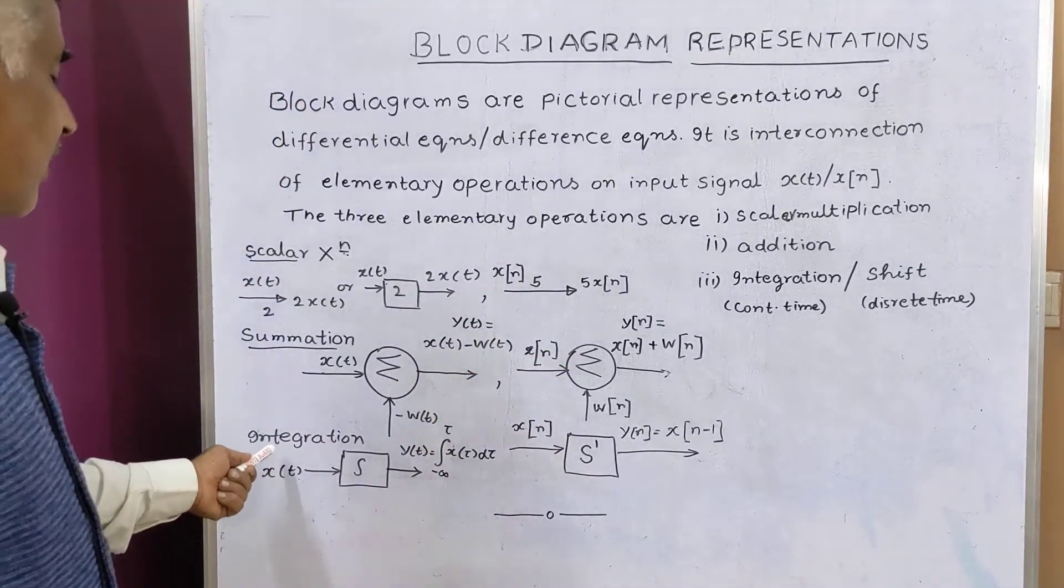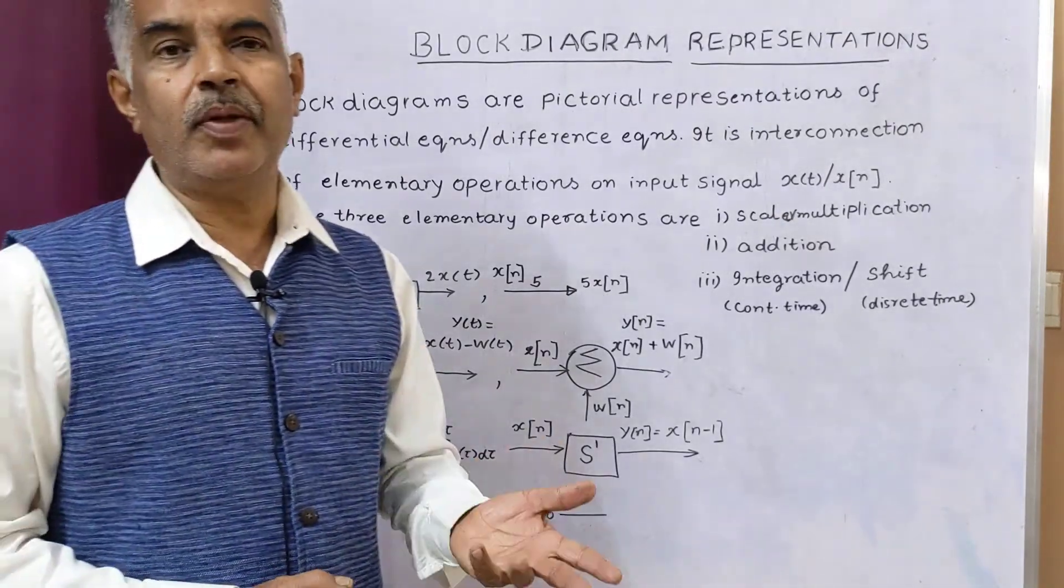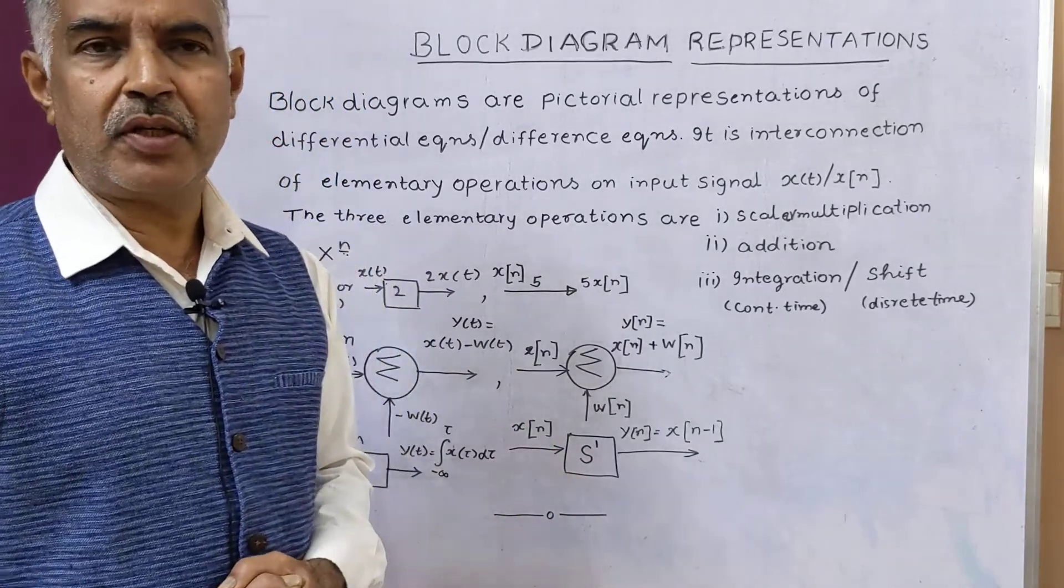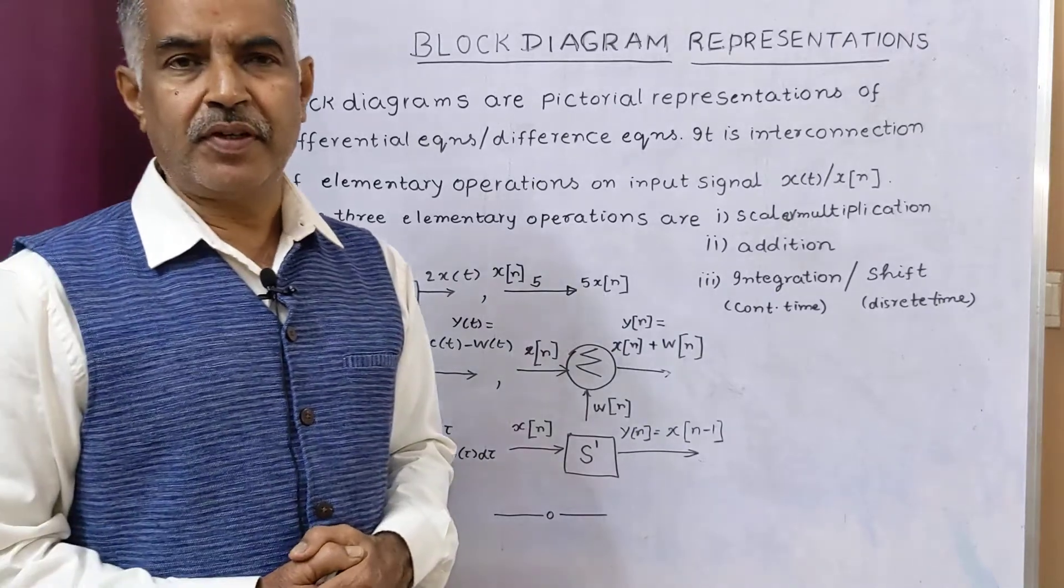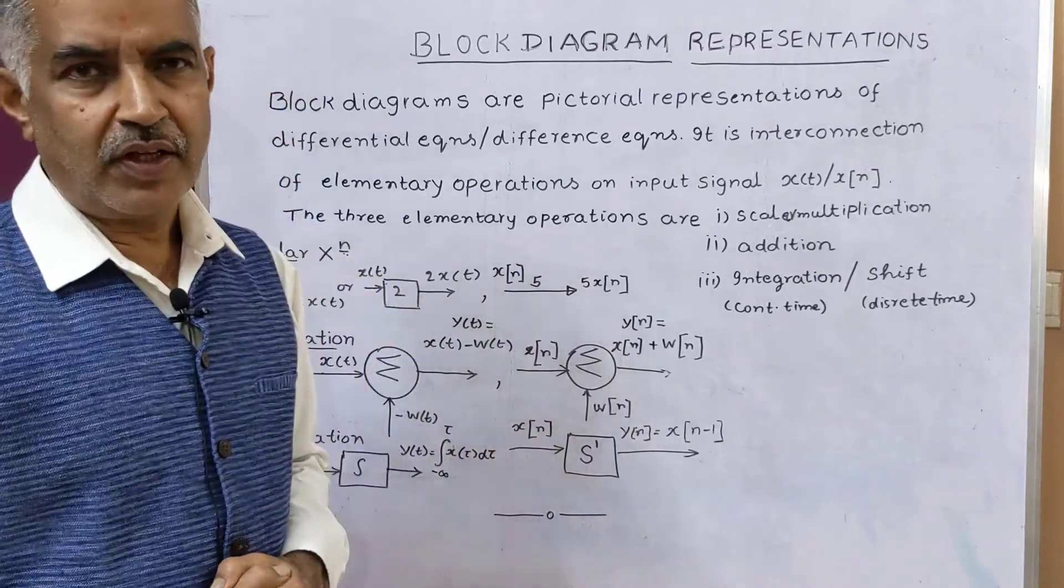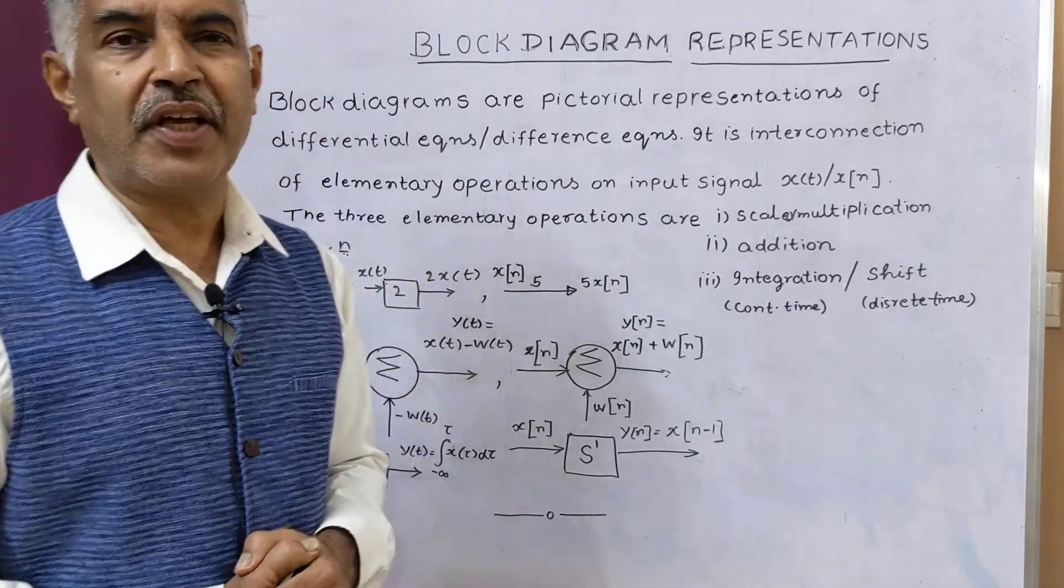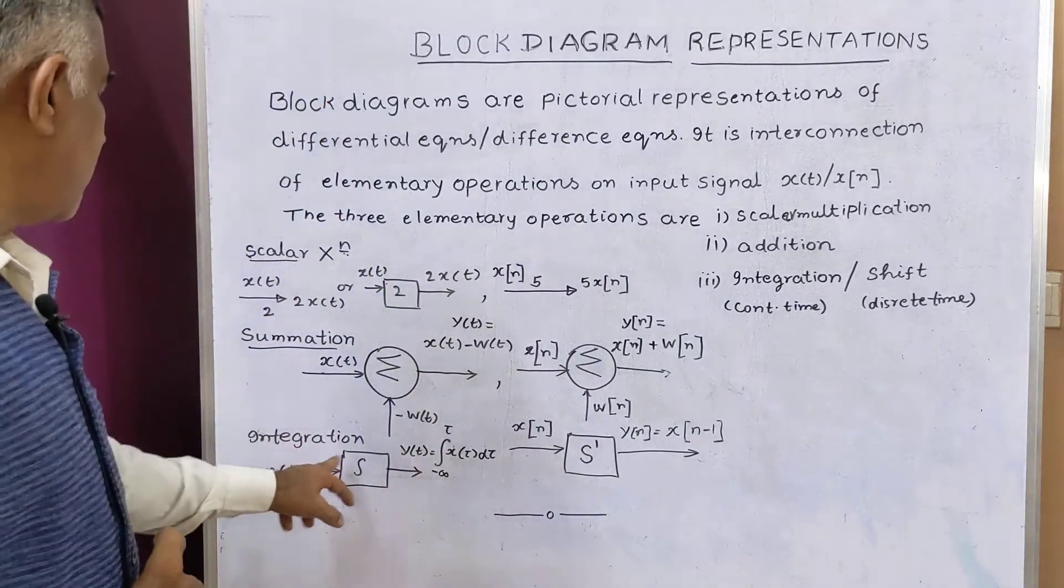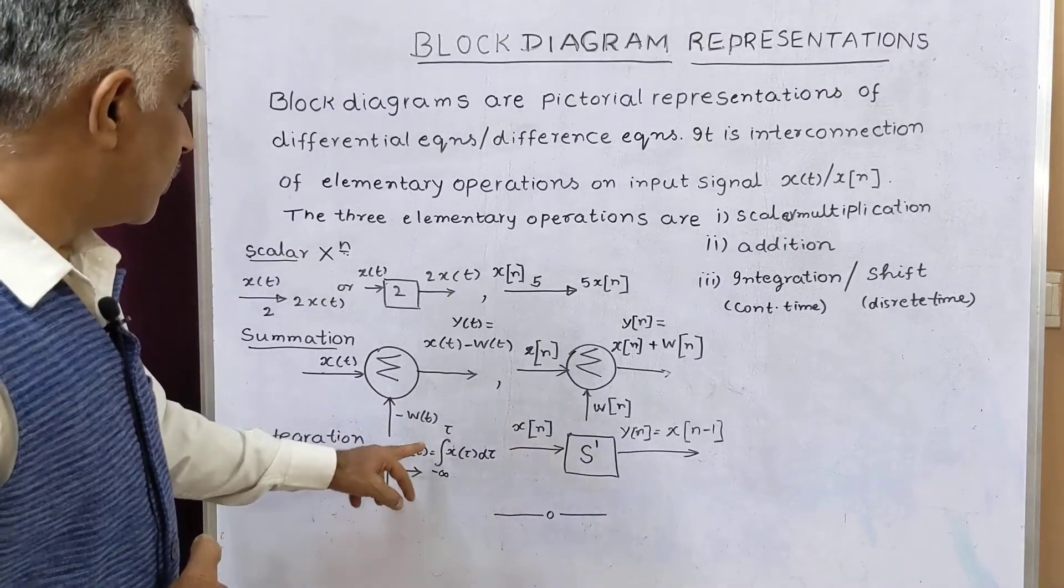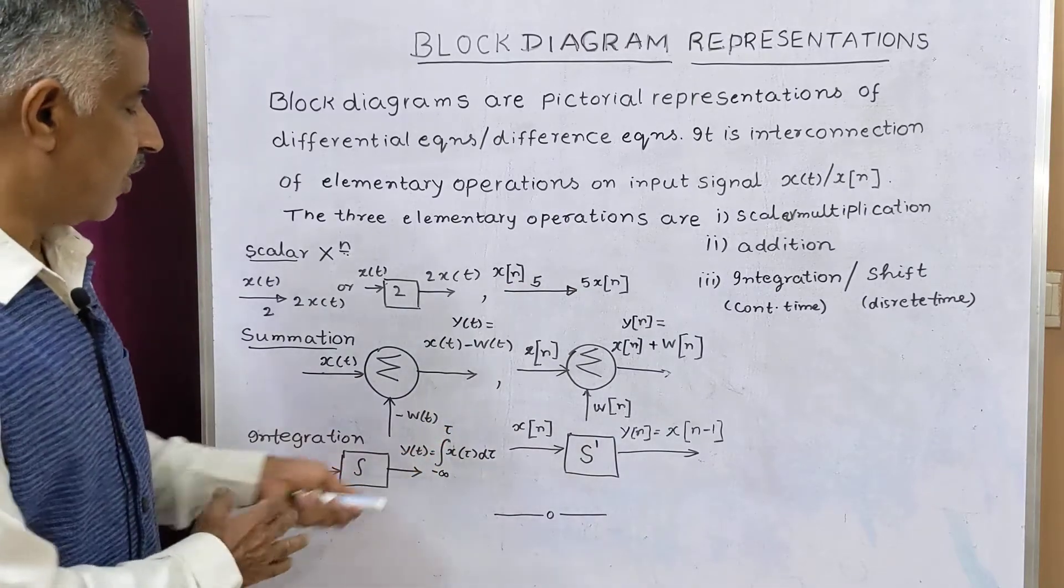Now lastly, the third operation is called integration. So integrators are preferable than differentiators. The reason is, if you have conducted experiments on operational amplifiers, op-amp as an integrator or a differentiator, differentiator introduces noise. That is why differentiators are not preferred compared with integrators. So here integration, x(t) is the input to the block of integration. y(t) is the output. So y(t) is integration between the limits minus infinity to tau, x(τ)dτ.